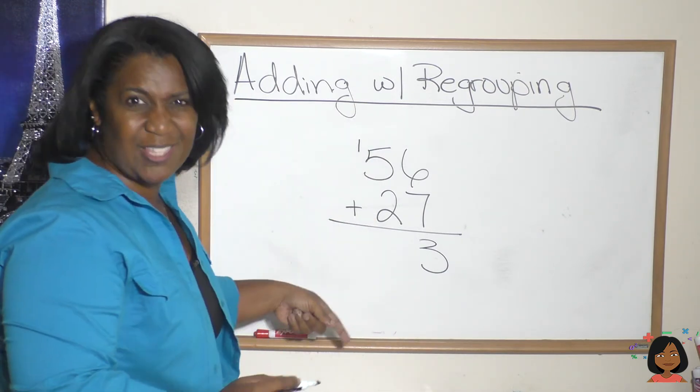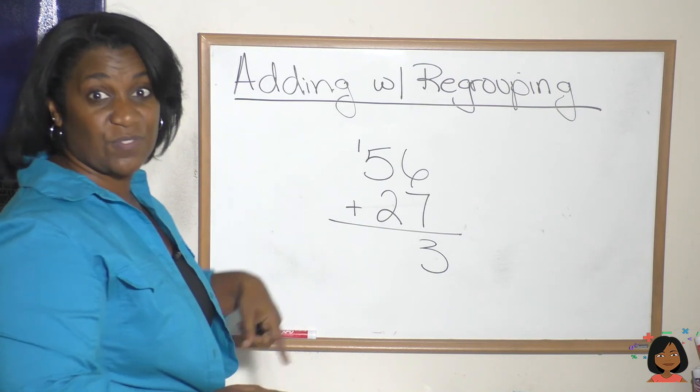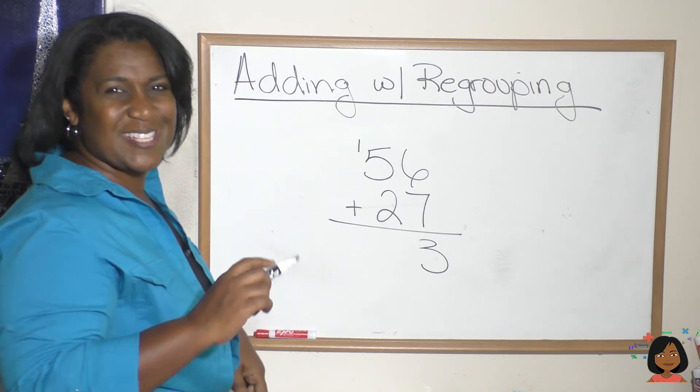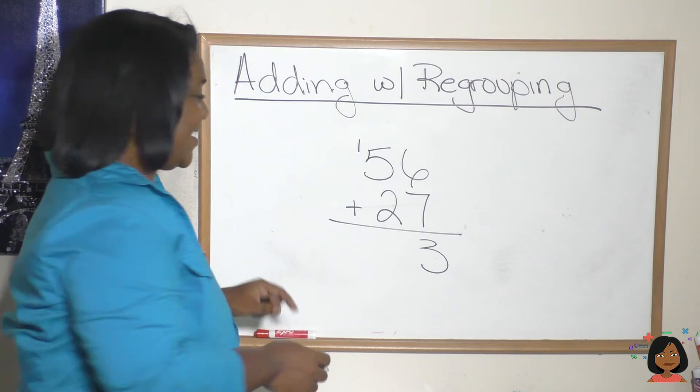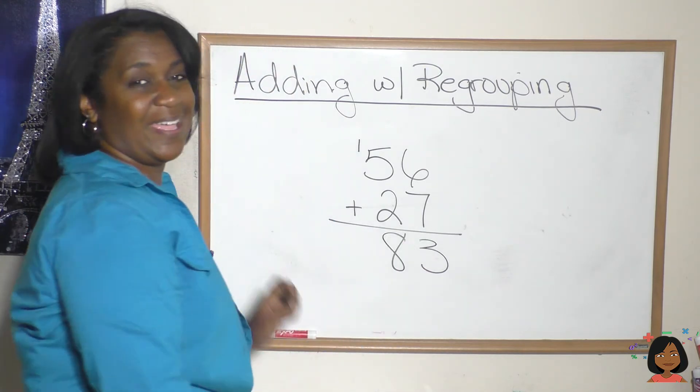And now we deal with the tens place. One plus five is six. Six plus two is eight. Eighty-three is our answer.